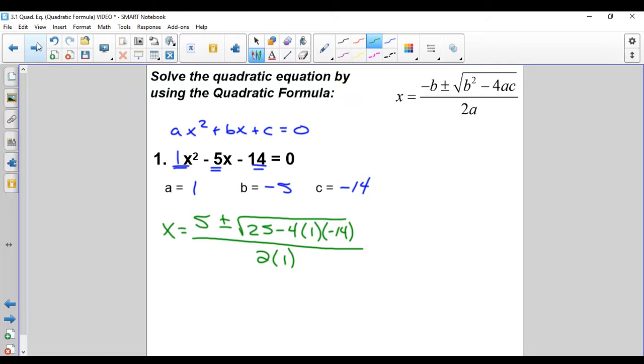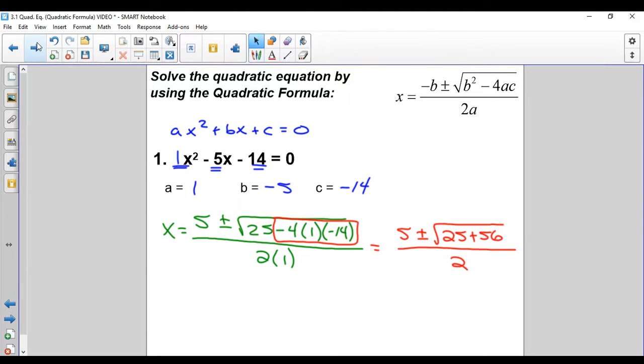Now, here's what I do moving forward. I deal with the minus 4ac portion. I do negative 4 times 1 times negative 14, so really just negative 4 times negative 14, which is a positive 56. So we get 5 plus or minus square root of 25 plus 56 over 2. Square root of 81 is nice. It's just 9.